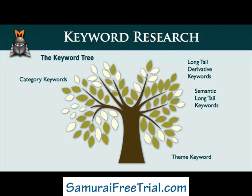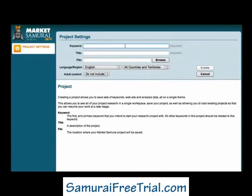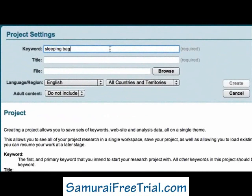Now that you understand what long-tailed derivative keywords and semantic long-tailed keywords are, let's take a look at how to use Market Samurai to find these important keyword phrases. What we need to do is conduct another round of keyword research for our theme keyword and each of our category keywords. So let's take a look at the sleeping bag example from start to finish. I'll begin by creating a new project and entering sleeping bag as my initial keyword.